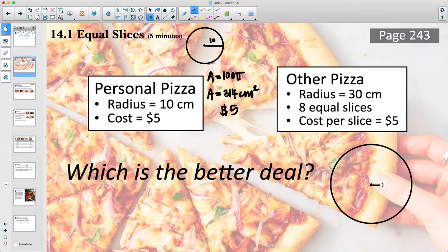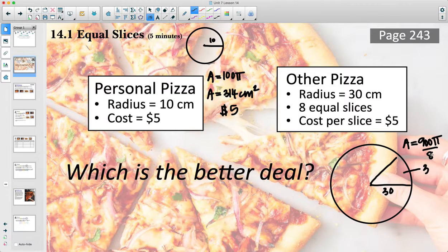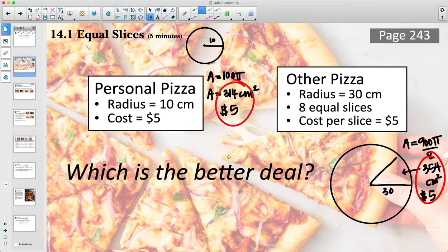So let's figure out the area for each of these eight slices. For this one, we have a radius of 30 centimeters. So the area here is going to be 30 times 30, which is 900π. And if we divide that into eight equal slices, each of these slices is going to be about 354 centimeters squared for each slice. And so again, that's for $5. So in this second pizza, you're actually getting more pizza for the same amount. So 354 for $5 versus 314 for $5. So this one would be the better deal.